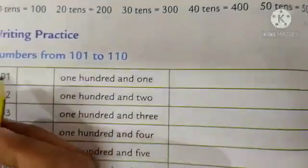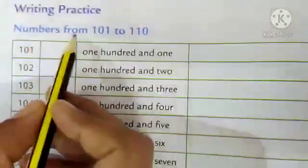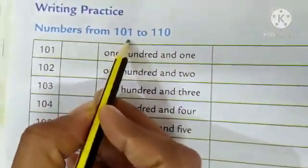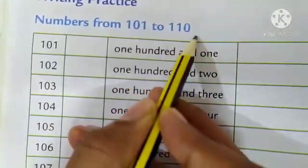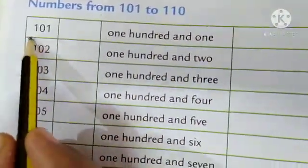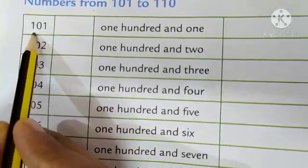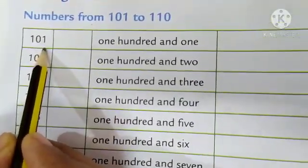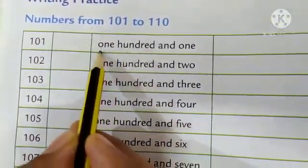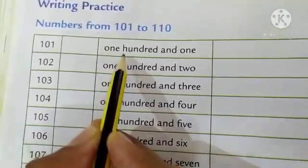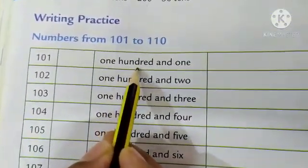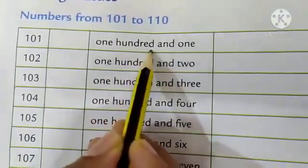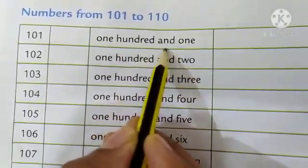Now, let's look at the number names. Numbers from 101 to 110. Look here. This is 101. How will you write that? O, N, E, 1. H, U, N, D, R, E, D. 100 and 1.